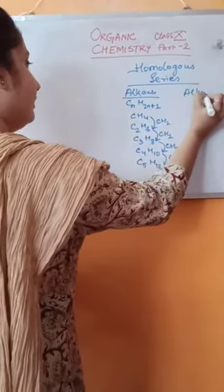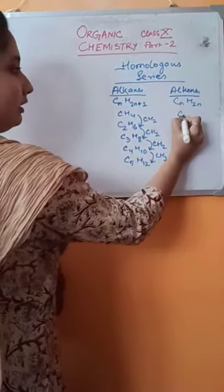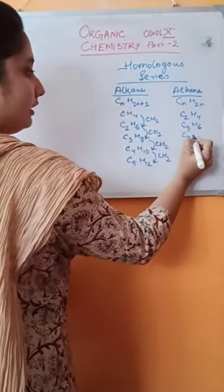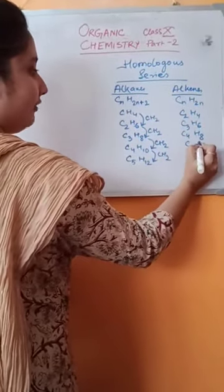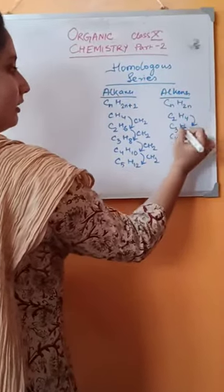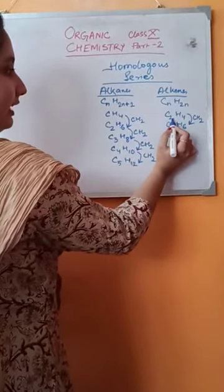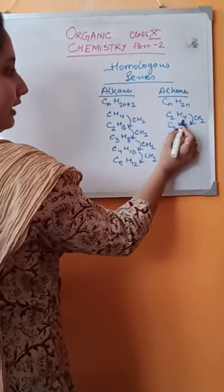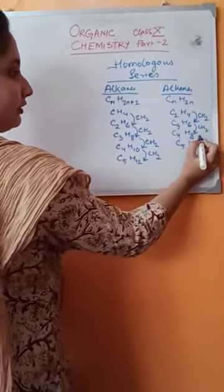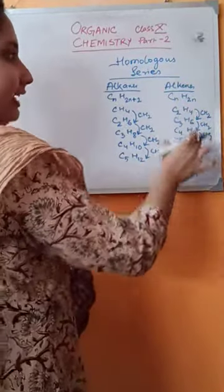In the same way, for alkenes, CₙH₂ₙ is the general formula. Here also, you will notice that ethene and propene differ by a CH₂ group. If we add 1 carbon and 2 hydrogens to ethene, it becomes C₃H₆ — propene. Again, propene and butene differ by a CH₂ group. Like this, butene and pentene differ by a CH₂ group, and the series continues. Alkenes form a homologous series.